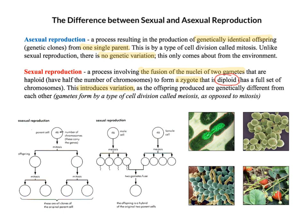For sexual reproduction, I've highlighted: fusion of nuclei of two gametes, forming a zygote, and introducing variation. I've deliberately highlighted three areas, because in the typical IGCSE mark schemes this is a three-mark question. I've tried to give the three core elements to these definitions that you should mention in an exam.